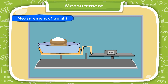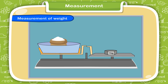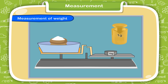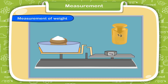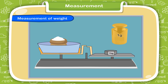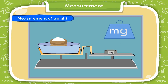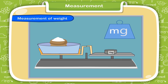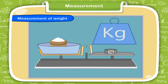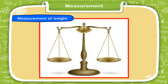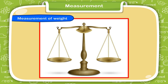Measurement of weight. The standard unit of weight is gram. We use it when we have to measure how heavy or light something is. We measure lighter things in milligrams and heavy things in kilograms. We use the weighing balance or weighing machine to measure the weight of things.